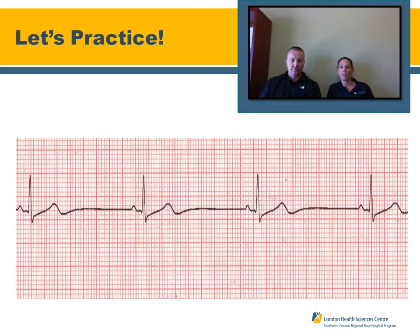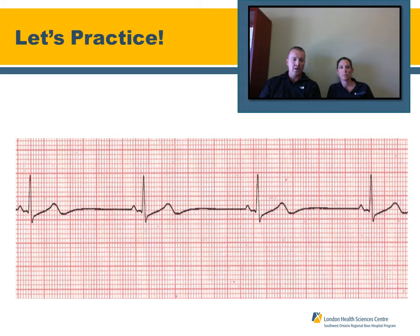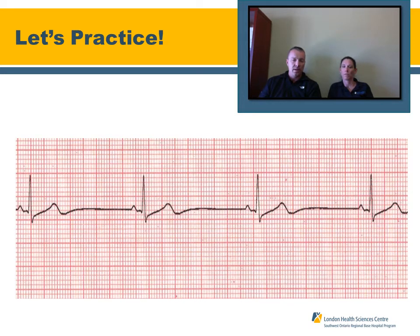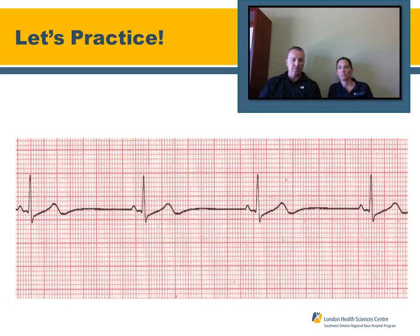Let's do some practice. Looking at the first strip: the rhythm appears regular. On a six-second strip, multiplying by 10 gives a heart rate of approximately 40. There is a P wave before every QRS and a QRS after every P. The QRS complexes are upright, narrow, and regular. The PR interval is less than 200 milliseconds, or five small squares. You can also use the scaling method counting down 300, 150, 100, 75, 60, 50 to find where the next R wave maps out. Most people also check the pulse against the monitor. This rhythm is sinus bradycardia.